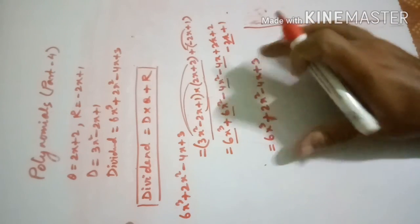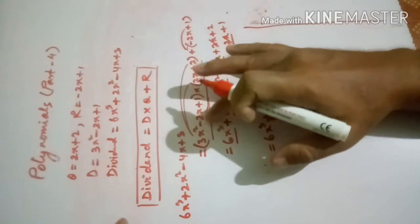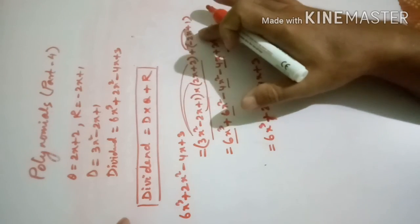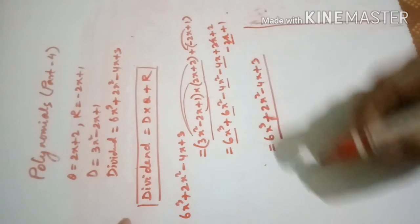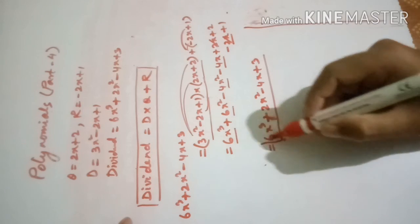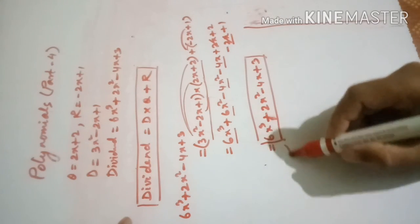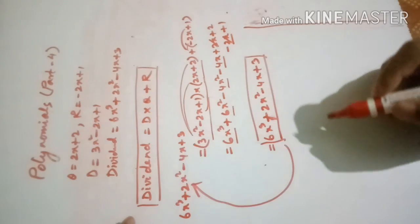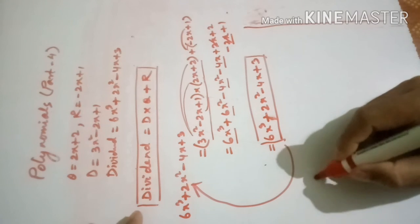The simplified right-hand side equals 6x³ + 2x² − 4x + 3, which is exactly the same as the dividend. This confirms that the division algorithm is verified and our division is correct.